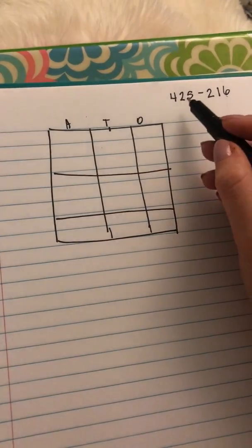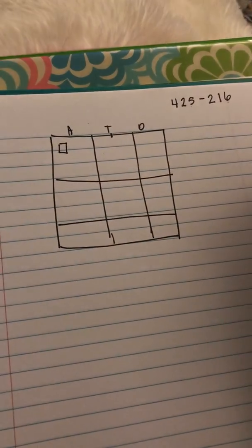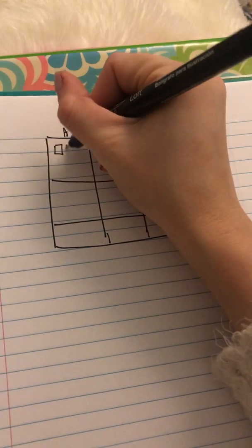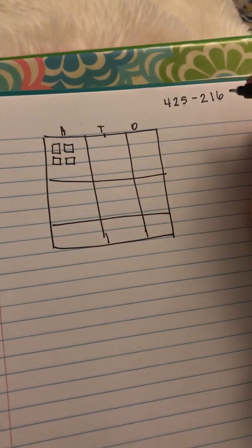So we're going to start with our first number, and we're going to go ahead and put it on our HTO chart. So we're going to go ahead and mark 425.